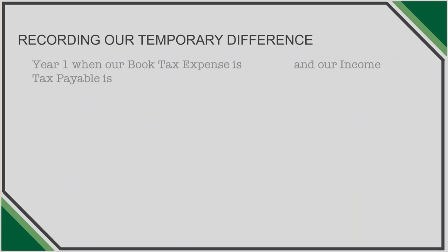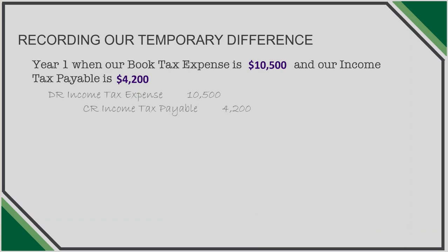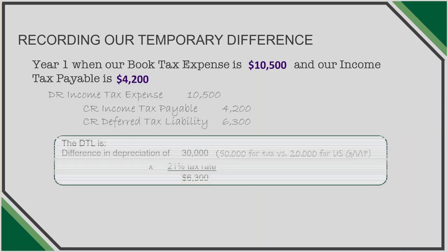Continuing with our example, in year one total tax on book income is $10,500 and the tax amount owed to the IRS is $4,200. The journal entry is a debit to income tax expense of $10,500, a credit to income tax payable of $4,200, and a credit of $6,300 to ensure debits equal credits. This credit is recorded to an account called a deferred tax liability. The $6,300 is computed by tax-affecting the difference in book and tax depreciation: $50,000 tax depreciation minus $20,000 GAAP depreciation equals $30,000, multiplied by the 21% tax rate, equals $6,300.